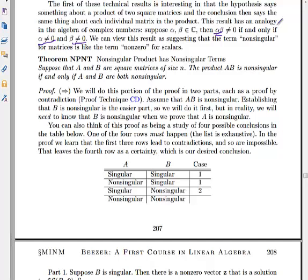It turns out that the analogous statement is true for non-singular matrices. The product of matrices is non-singular if and only if the individual matrices themselves are both non-singular. The proof is going to be somewhat similar to the way you prove the complex number case.